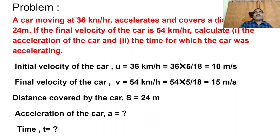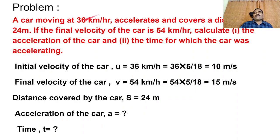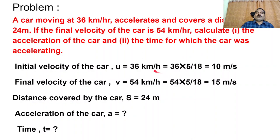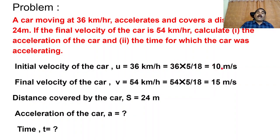The car is moving at 36 km per hour and covers a distance of 24 meters — it is in the SI system. So convert km per hour into meters per second. Initial velocity U equals 36 km per hour. Multiply by 5 by 18: 36 into 5 by 18 equals 10 meters per second.